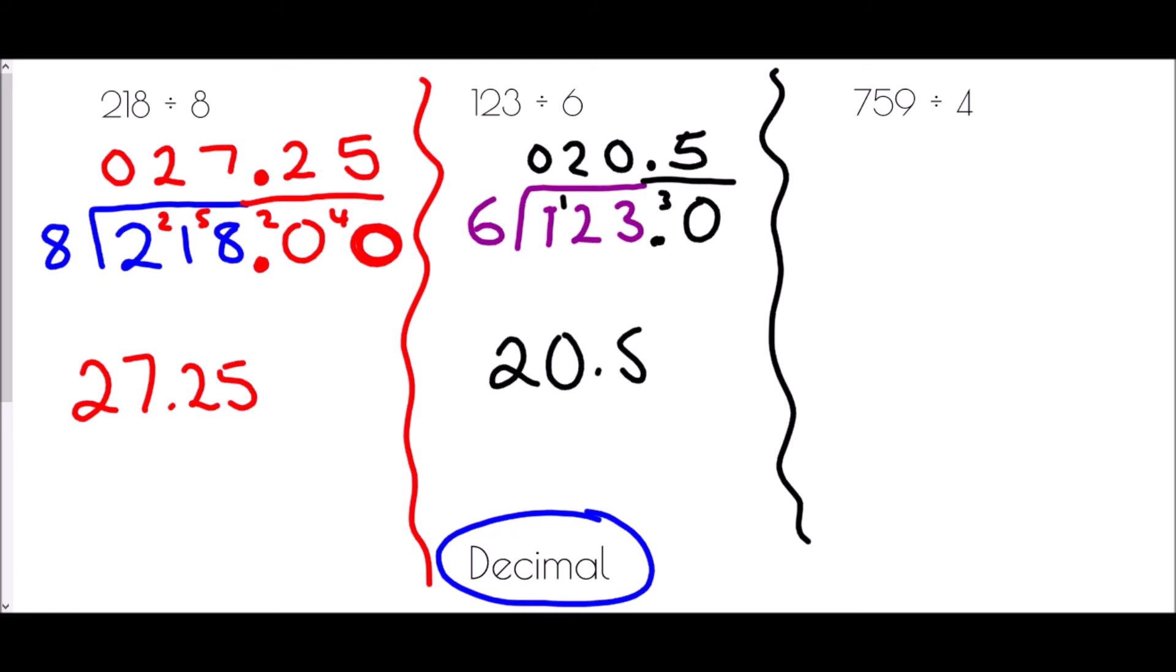And finally 759 divided by 4. Well the same thing. 759 divided by 4. How many 4s go into 7? Well that is 1 with 3 left over. How many 4s go into 35? Well 8 would make 32, so that's with 3 left over. How many 4s go into 39? Well 9 4s would be 36. And so we've got 3 left over. So we're going to add 0.0. We're going to put a point in our answer. How many 4s go into 30? Well 7 of them would make 28, so that leaves us with 2 left over. An extra 0. How many 4s go into 20? It is 5. And so the answer there is 189.75.